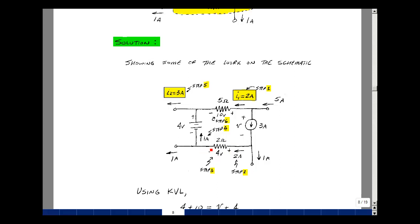Now the current coming in here is 2 amps, leaving is 1 amp, so there must be 1 amp leaving this way. 2 is equal to 1 plus 1. That was my step 4.